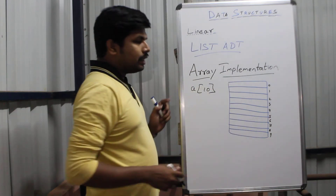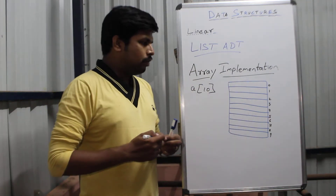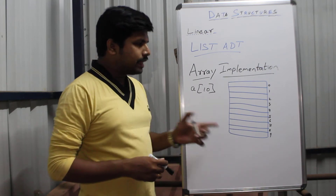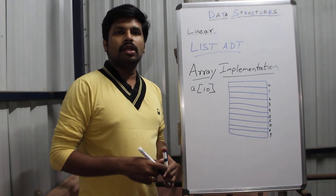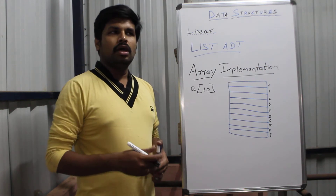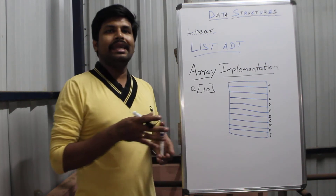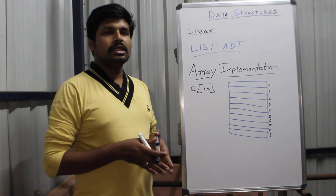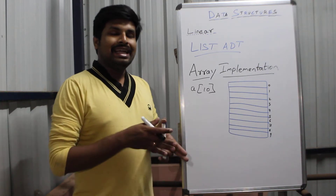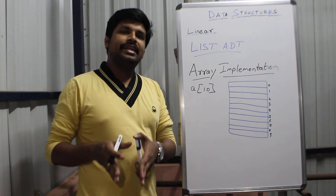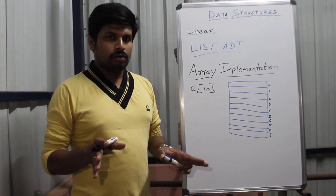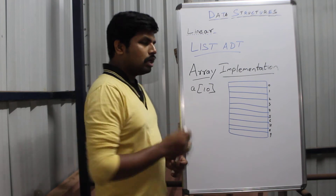We have 10 cells in this array, and in these 10 cells we are going to work out how to insert an element, how to delete an element, how to insert in the middle, and how to delete in the middle. These are the things we are going to discuss in the array implementation of List ADT in linear data structures.